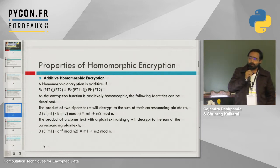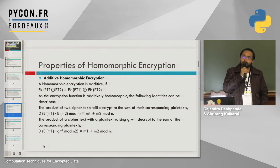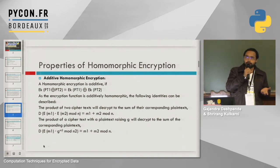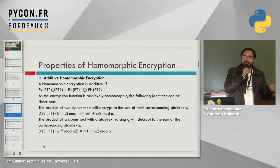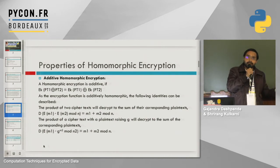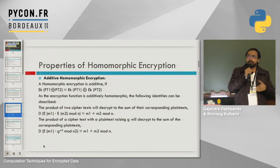When we say homomorphic encryption, there are two important properties: additive homomorphic encryption and multiplicative homomorphic encryption. Cryptographic algorithms like RSA, Paillier, and ElGamal either support the additive property or the multiplicative property — they don't support both. When they don't support both, it's known as partial homomorphic encryption, meaning you can perform only a selected number of operations on the encrypted data. Cryptographic systems like Gentry and BGV support both operations, and that is known as fully homomorphic encryption.